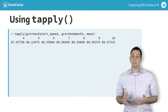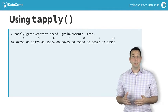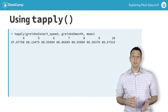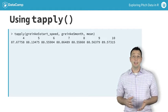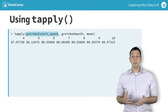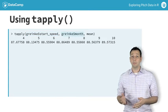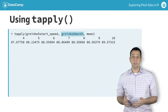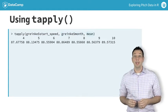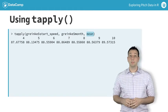For example, if you want to get the average pitch velocity by month, you would indicate that the variable of interest is start speed, the month variable is the group, and you want to calculate the mean.